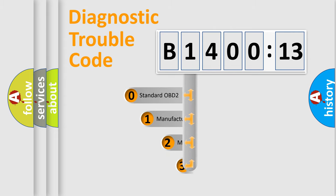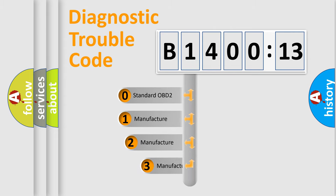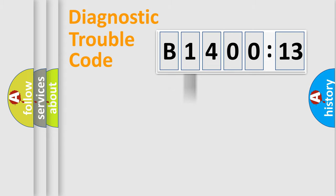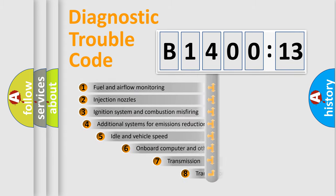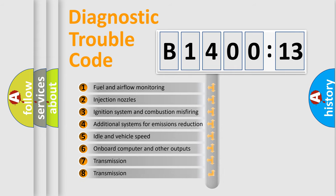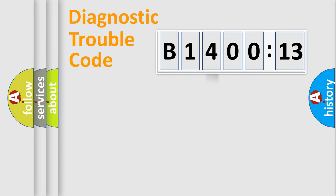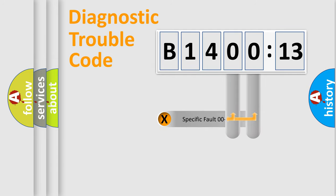This distribution is defined in the first character of the code. If the second character is expressed as zero, it is a standardized error. In the case of numbers 1, 2, or 3, it is a more specific expression of a car-specific error. The third character specifies a subset of errors, and this distribution is valid only for the standardized DTC code.